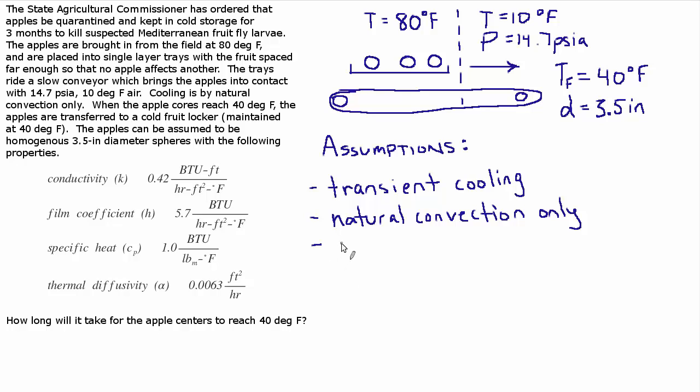The next assumption I'm going to make is that the apple is going to be treated as a distributed body not a lumped. And that really comes back to this idea that the apple can be treated as a three and a half inch diameter sphere with these properties.